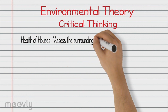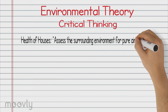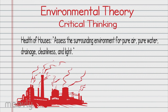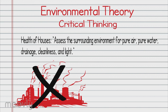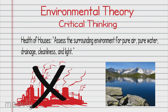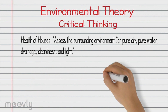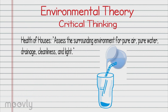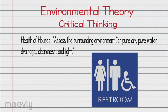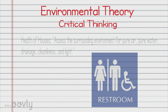Health of Houses. Assess the surrounding environment for pure air, pure water, drainage, cleanliness, and light. This factor covers previously mentioned interventions such as ensuring proper ventilation and adequate natural light, but also includes making sure that Johnny has a fresh pitcher of water throughout the shift and making sure his restroom is working and will take away all waste products.